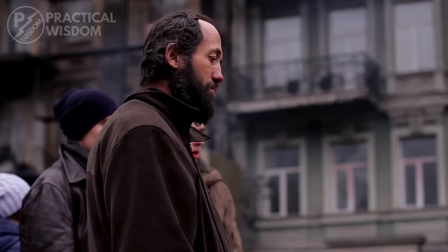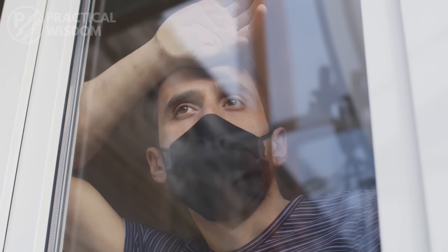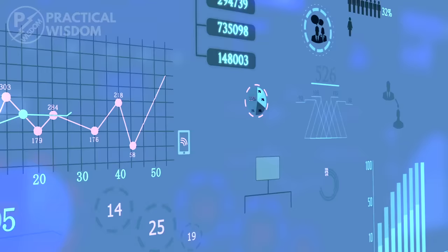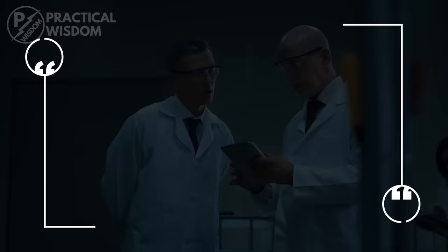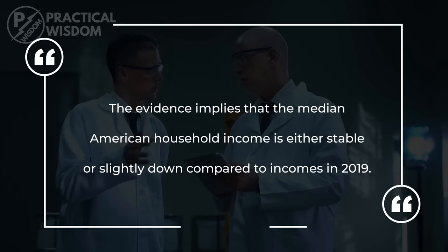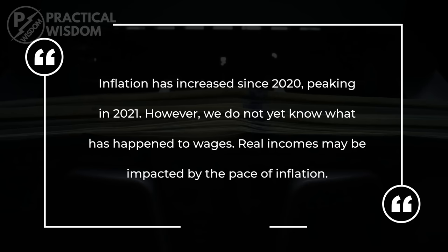Economic factors such as excessive inflation, waves of employee resignations, struggling small enterprises, and other repercussions of the coronavirus pandemic have had an impact on worker and business prosperity in recent years. Unfortunately, current class-related statistics from 2019 do not account for the pandemic's economic impact, and we won't see the updated numbers until late 2022 or later. The evidence implies that the median American household income is either stable or slightly down compared to 2019, says Rakesh Kachar, a senior researcher at Pew Research Center. Inflation has increased since 2020, peaking in 2021, and we do not yet know what has happened to wages. Real incomes may be impacted by the pace of inflation.